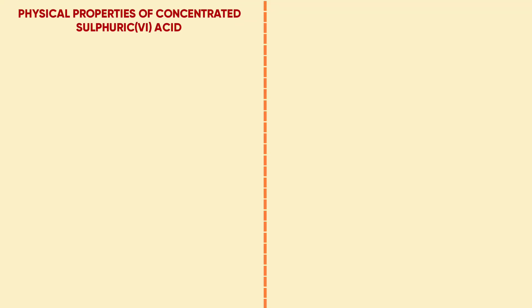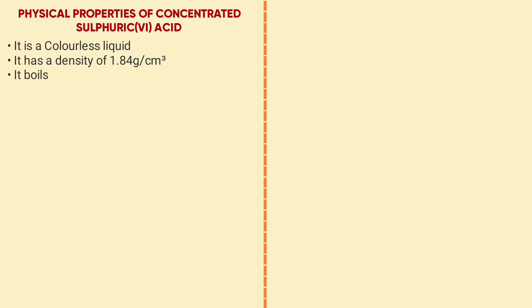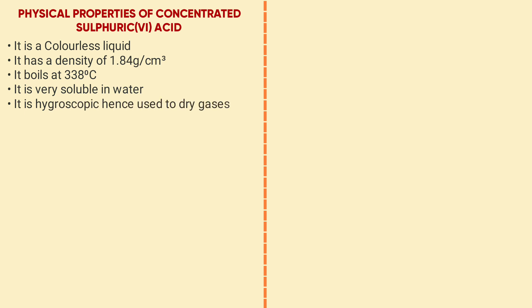Physical properties of concentrated sulfuric acid include: it is a colourless liquid; it has a density of 1.84 g/cm³; it boils at 338°C; it is very soluble in water; and it is hygroscopic, hence it is used for drying gases that do not react with it.